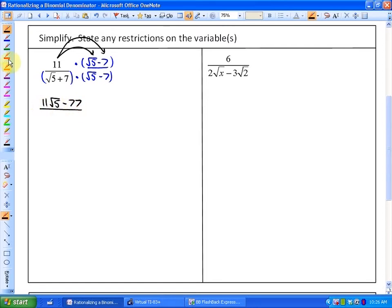As far as our denominator goes, we're going to have to use the distributive property. Root 5 times root 5 is root 5 times 5. Root 5 times negative 7 is negative 7 root 5. 7 times root 5 is plus 7 root 5. And finally, 7 times negative 7 is negative 49.